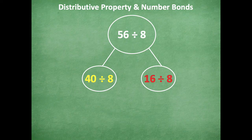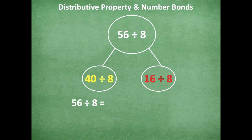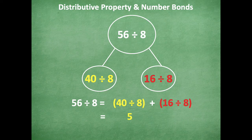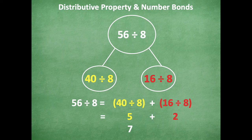Okay, so go ahead and pause and do that and then click play when you're ready to go over it together. All right, friends, if you need more time, make sure you click pause. Otherwise, here we go. So we have 56 ÷ 8 = (40 ÷ 8) + (16 ÷ 8). I know that 40 ÷ 8 = 5 and 16 ÷ 8 = 2. So 5 + 2. We know that 5 + 2 = 7. So 56 ÷ 8 = 7.